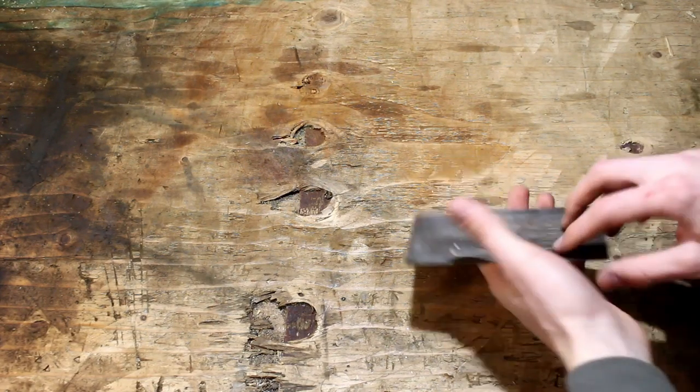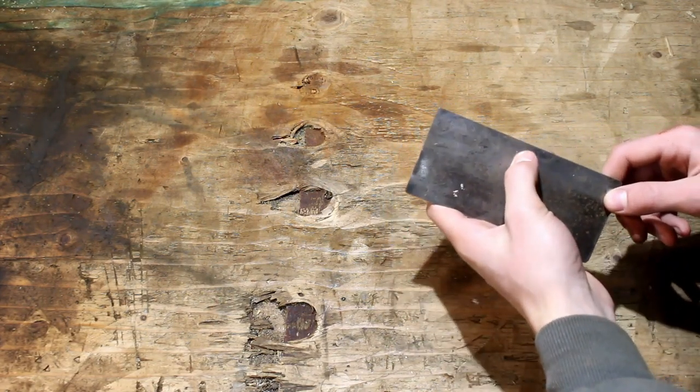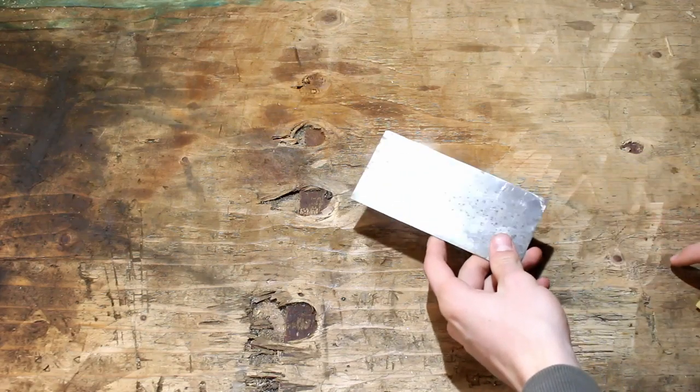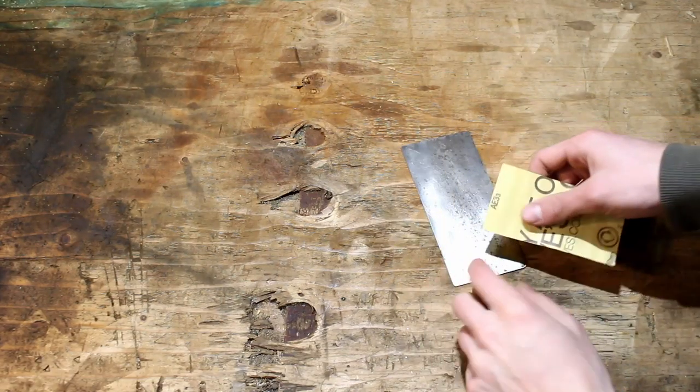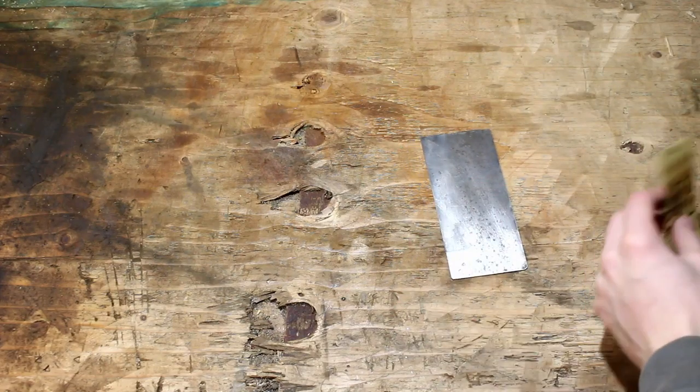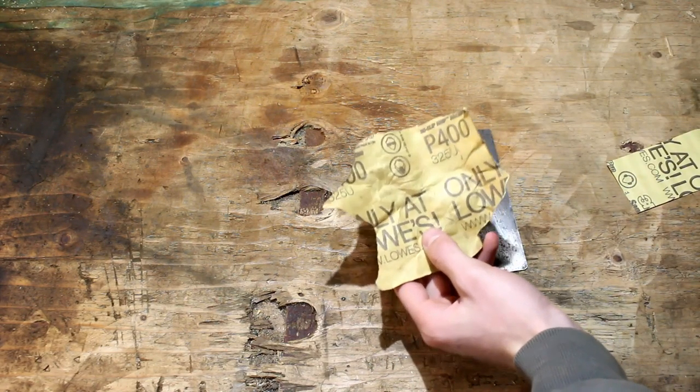All right guys, so today we've got kind of an easy restoration. We just have to restore this card scraper, and to do that we're going to use a 220 grit sandpaper, and then we're going to go up to a 400 grit.